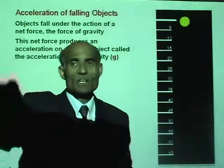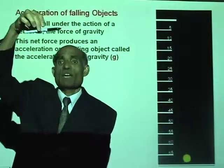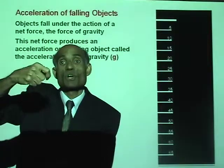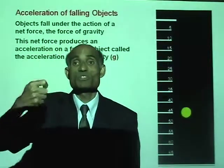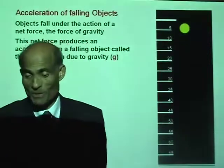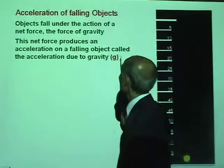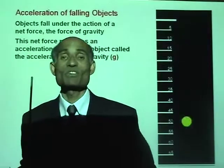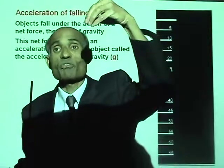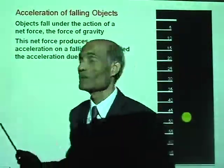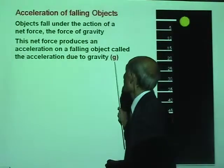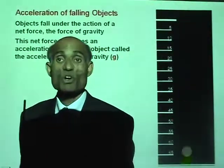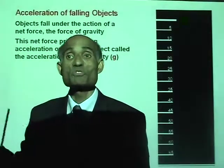Every object, when dropped, falls with an acceleration we call the acceleration due to gravity, represented by g. Whenever we want to represent the acceleration of a freely falling object, we use the small letter g. It is called acceleration due to gravity.